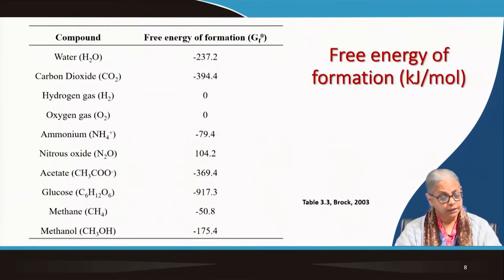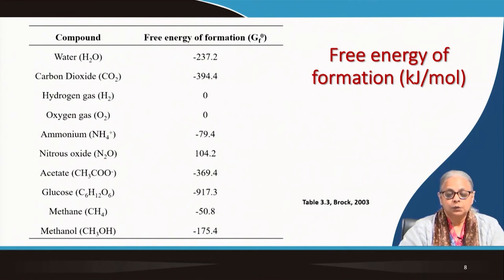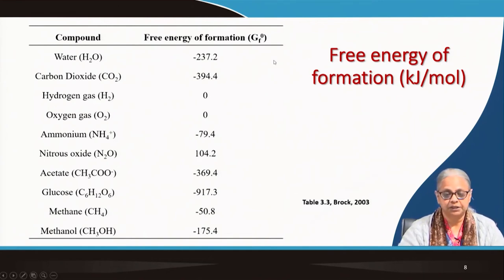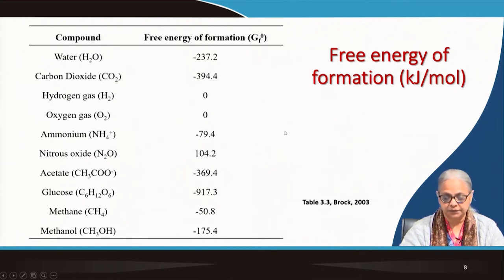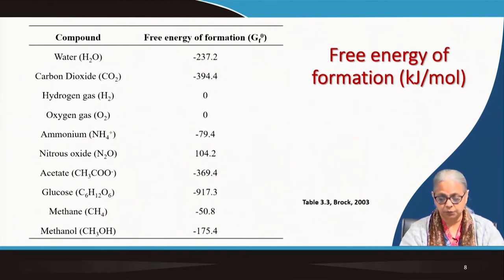Here we have some values for various compounds encountered in microbiology. You can see that for elemental hydrogen gas and oxygen gas the value is zero, while all others have negative delta G values of formation. These values will be important in subsequent parts of this topic.